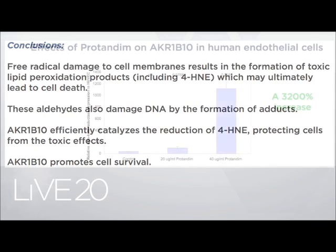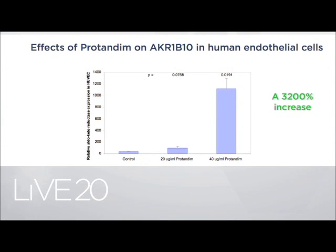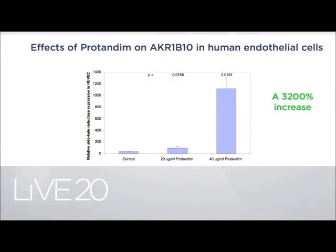What does Protandim do to this gene? The control is on the left, and at two concentrations — a very low and a higher concentration of Protandim — you see a 3,200%, or 32-fold, increase in the production of this gene product. This is a good one: the more of this you have, the more protected you are. Each of those 400 genes can be analyzed this way. The overall predominant theme is exactly what you've seen here: the genes that help our cells survive are upregulated, and the genes that cause damage and problems are being decreased.